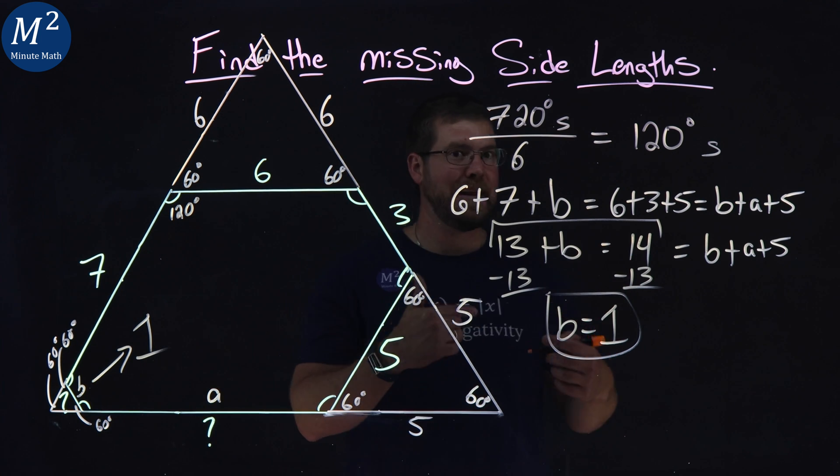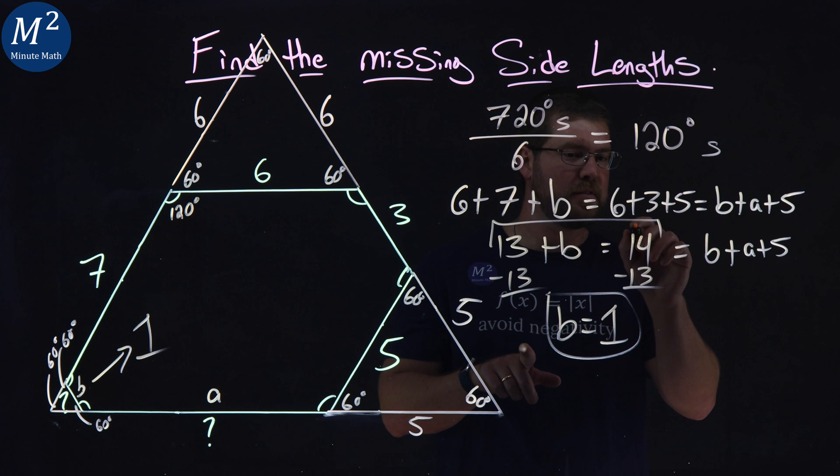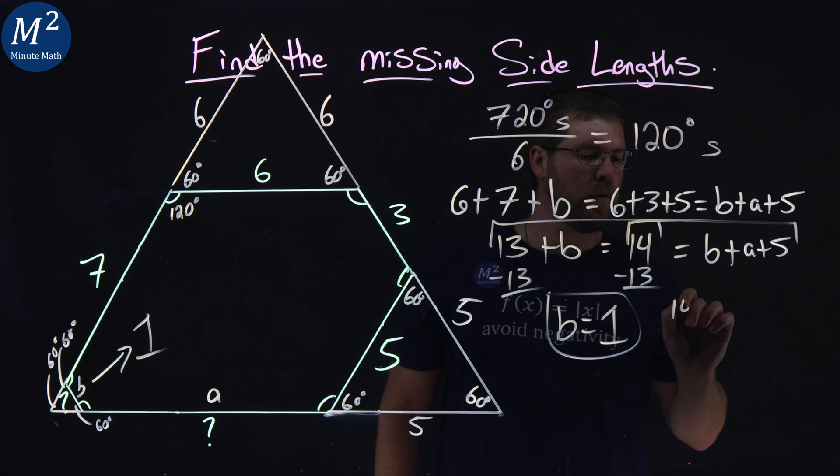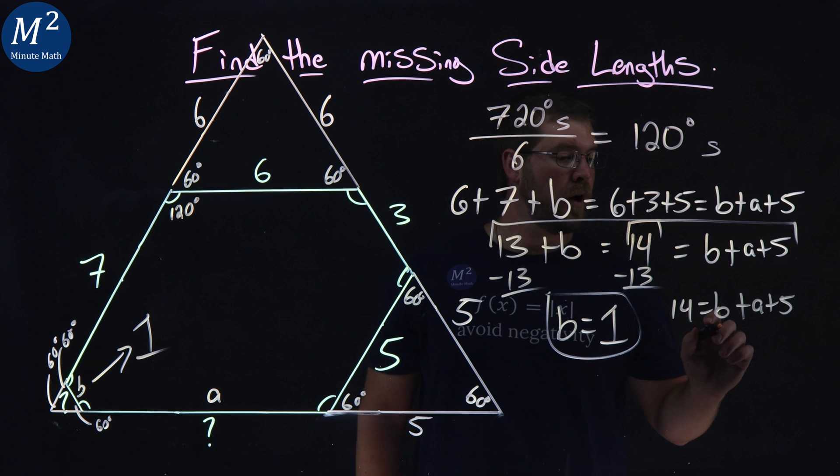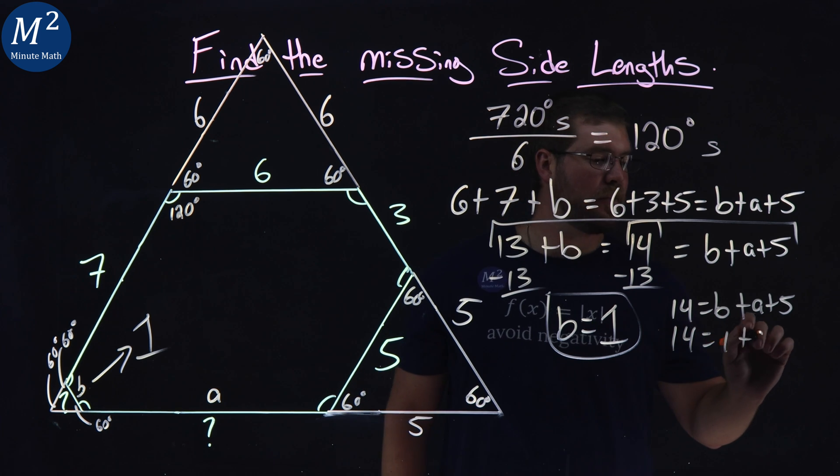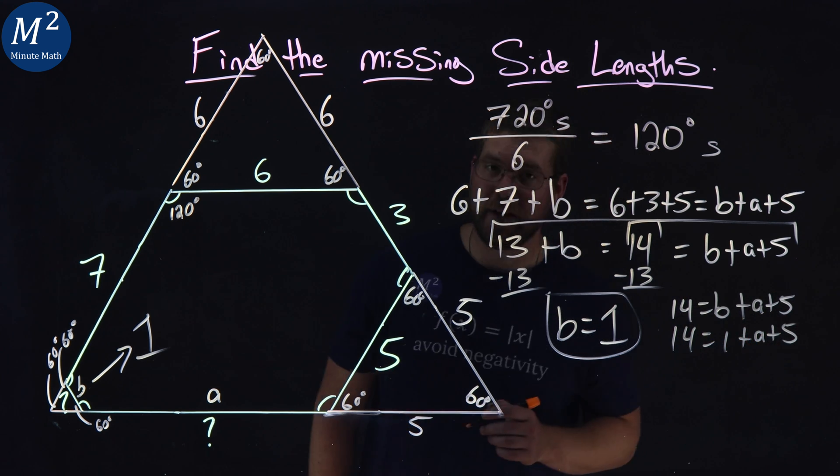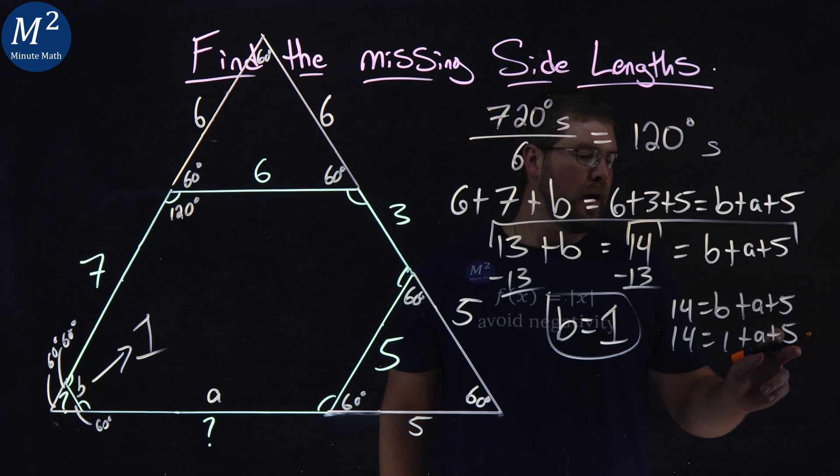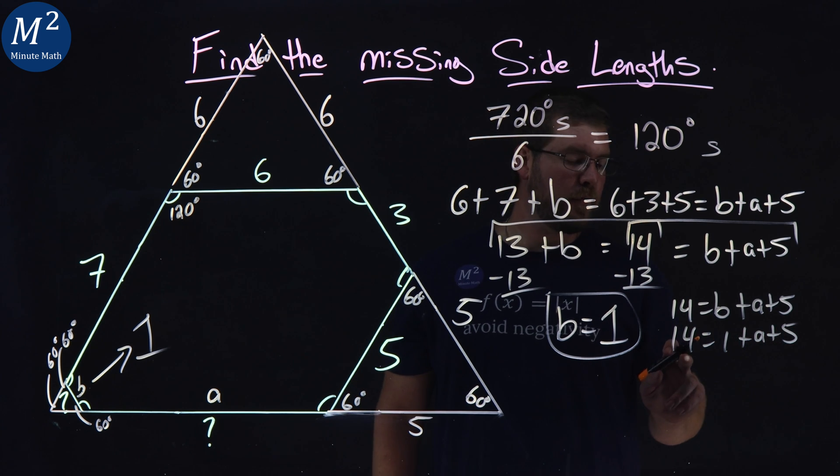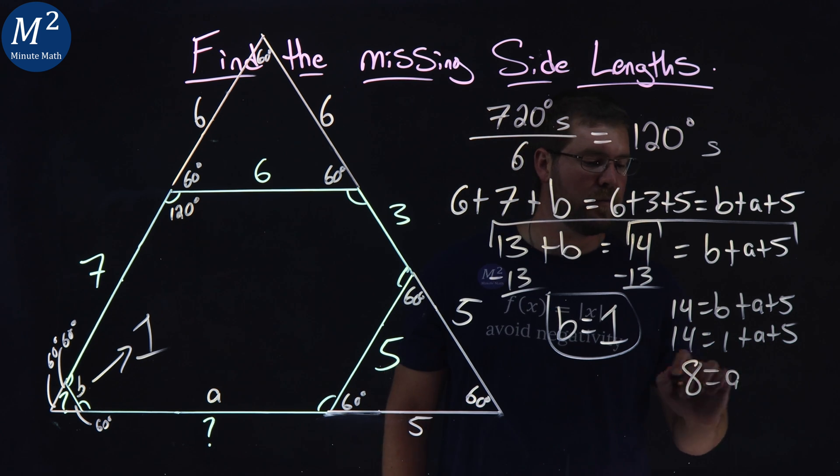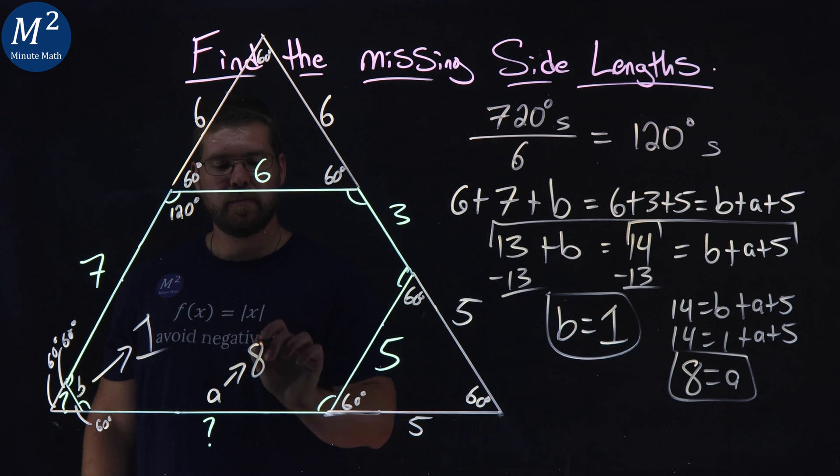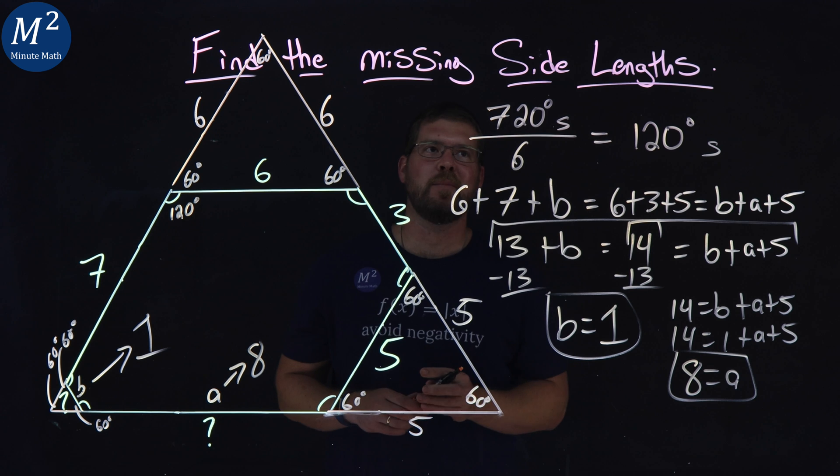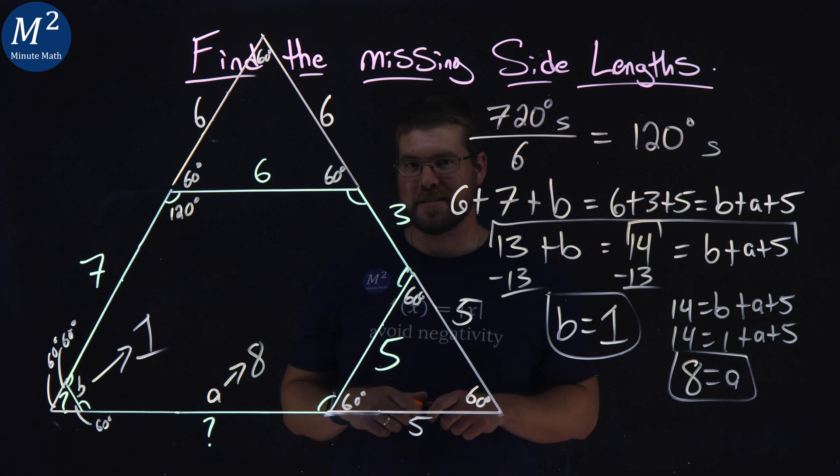Now let's go find A. Again, the equation here, 14. Let's go this group. 14 equals B plus A plus 5. B is 1. So 14 equals 1 plus A plus 5. 1 plus 5 is 6. Subtract that from 14 and we get 8 equals A. So our A value here is equal to 8. And now we found the missing side lengths of our hexagon.